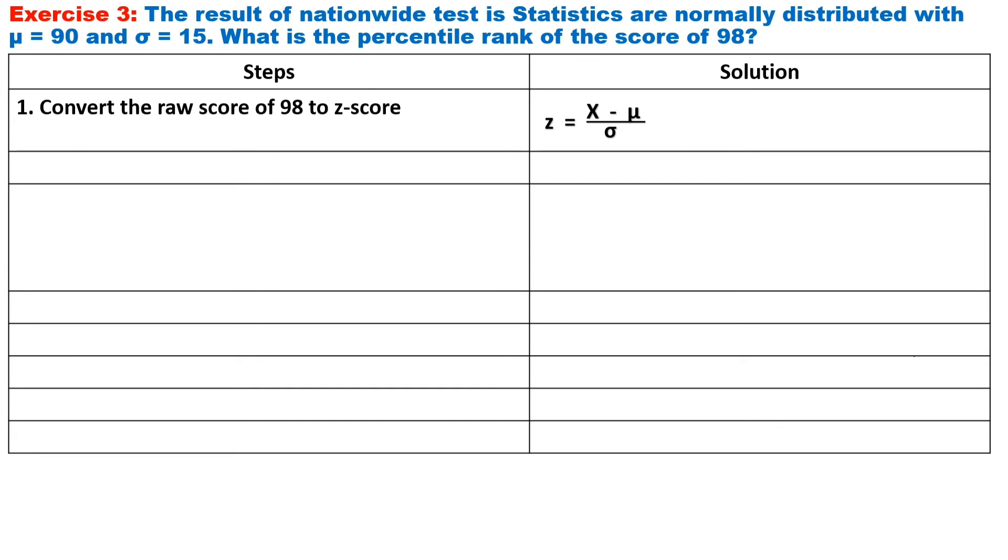Step one is we need to convert the raw score of 98 to Z-score just because on the Z-table, we need the Z-score, not the raw score. The formula for Z-score equals raw score minus mean all over its standard deviation. By substitution, we have 98 minus 90 all over 15. 98 minus 90 equals 8 over 15. By simplifying 8 over 15, it is equivalent to 0.53.